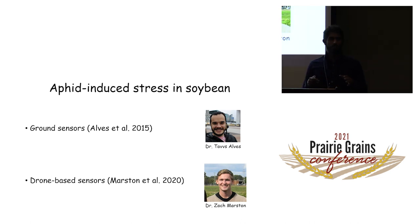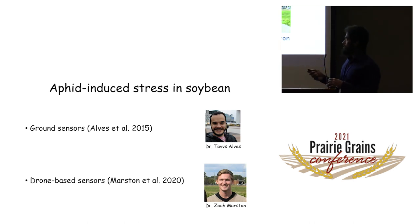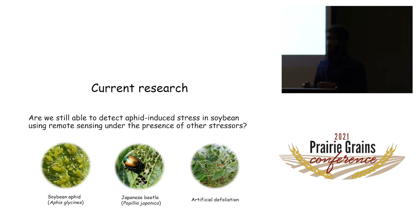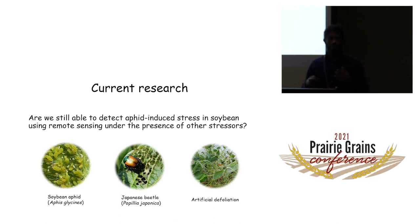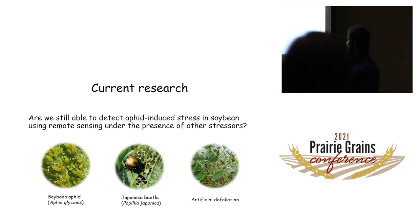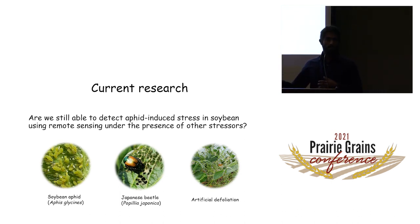We know that stressors in the field can happen at the same time — for example, soybean aphids alongside defoliation. So we asked ourselves: are we still able to detect aphids under the presence of other stressors? To answer that, we selected Japanese beetle as an example of insect defoliation, using these insects to simulate actual insect feeding.